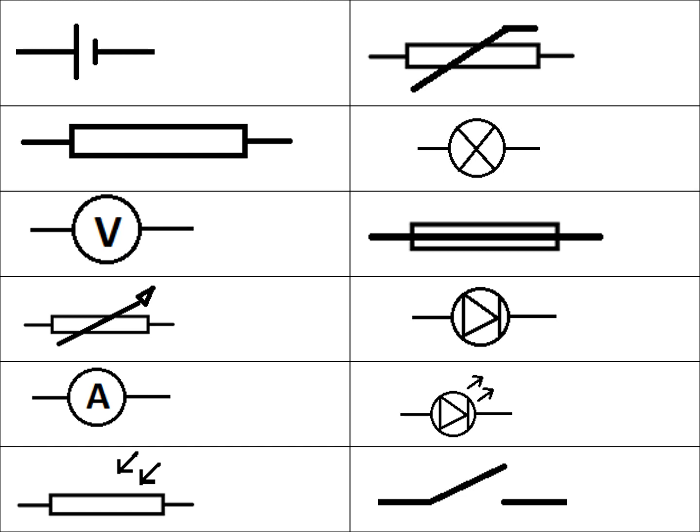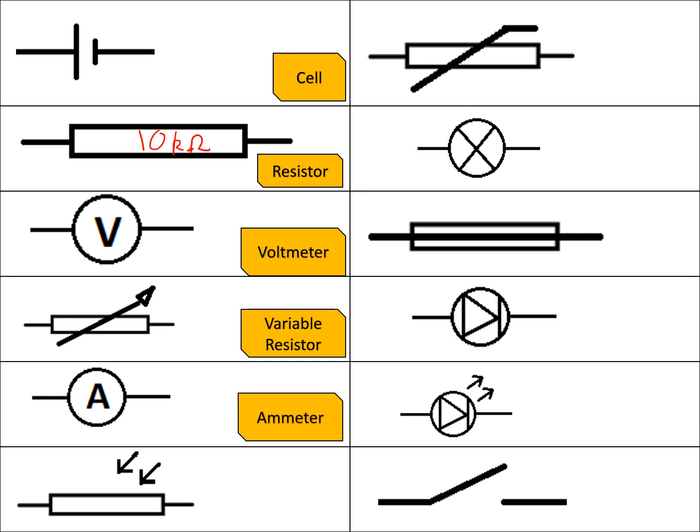Here's what they are. We're going to work on just identifying them to start off with. On the top left we have a cell, then we have a resistor, a fixed resistor, so we'd have a given resistance, for example something like maybe 10 kilo-ohms or 470 ohms. Then we have a voltmeter which measures potential difference, and we have a variable resistor.